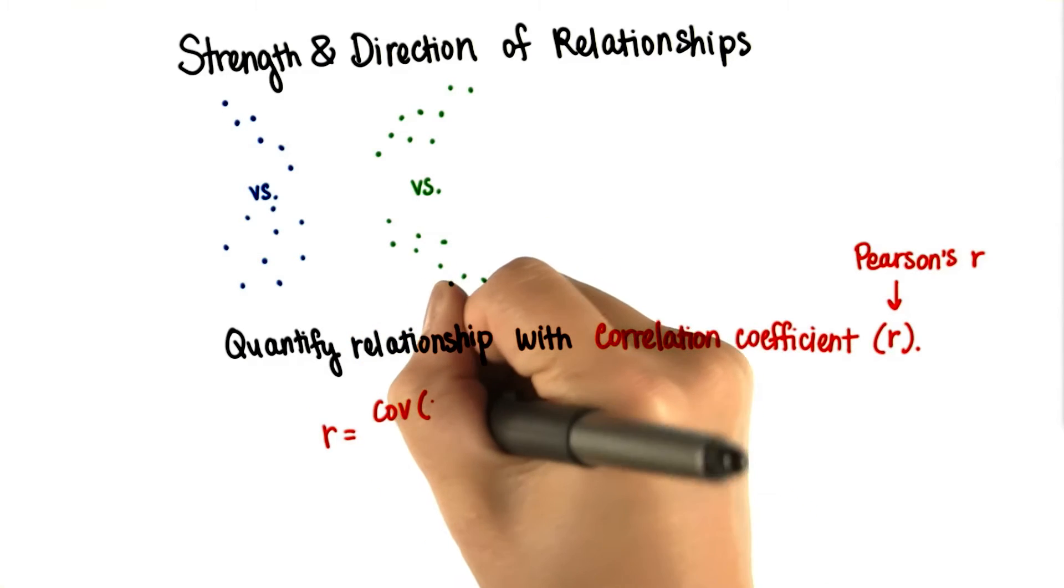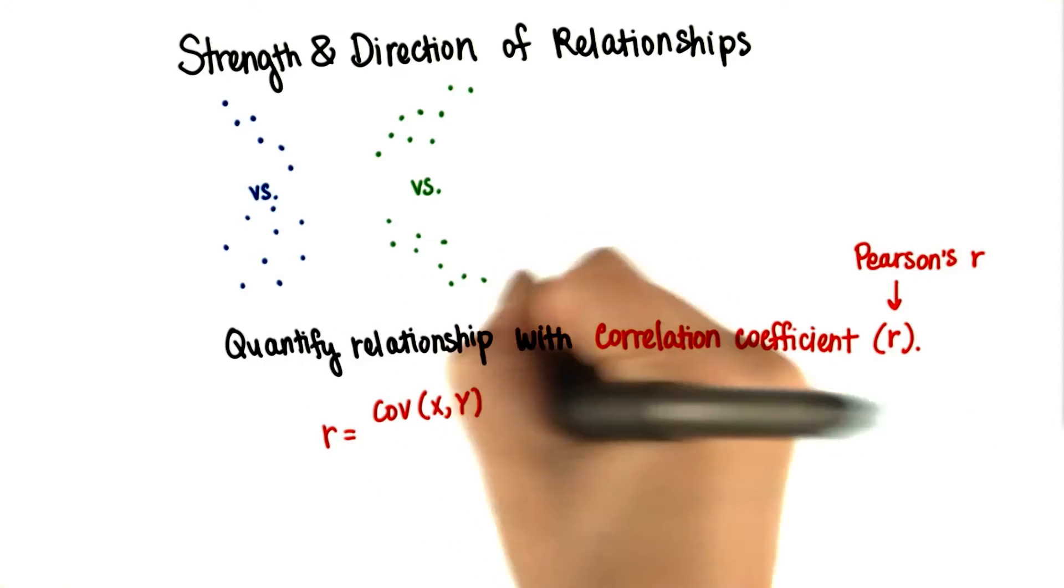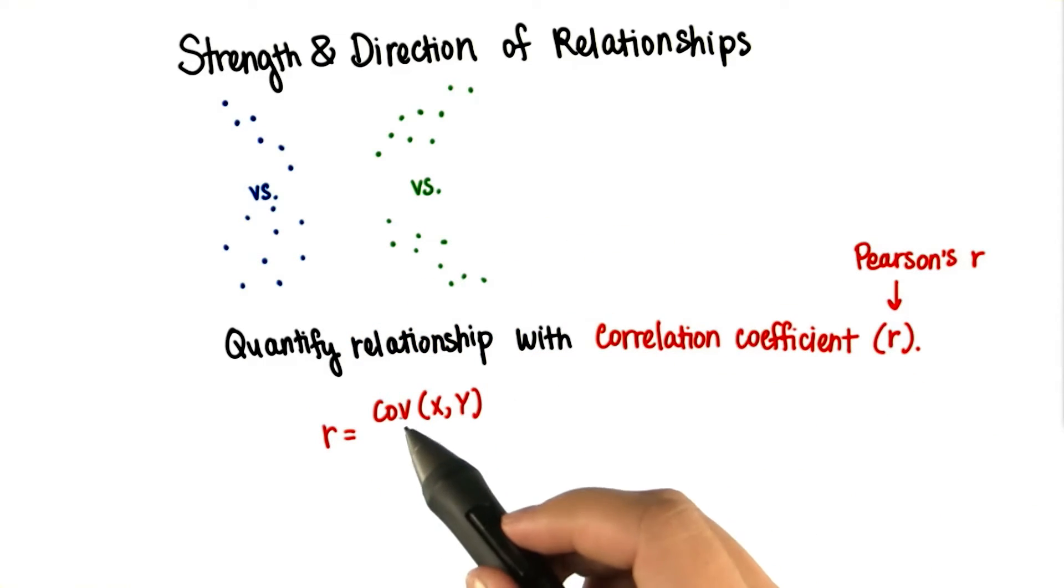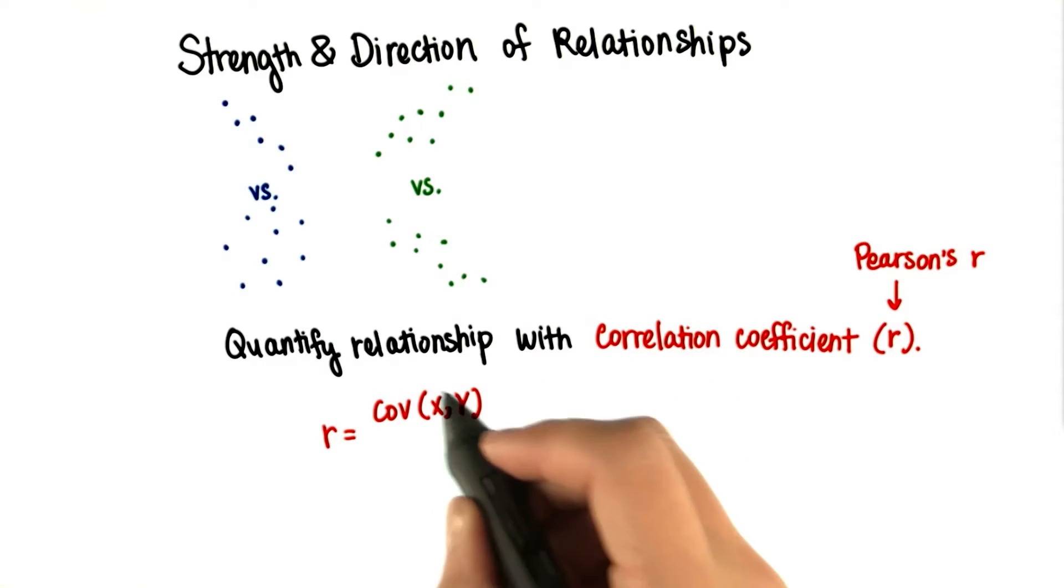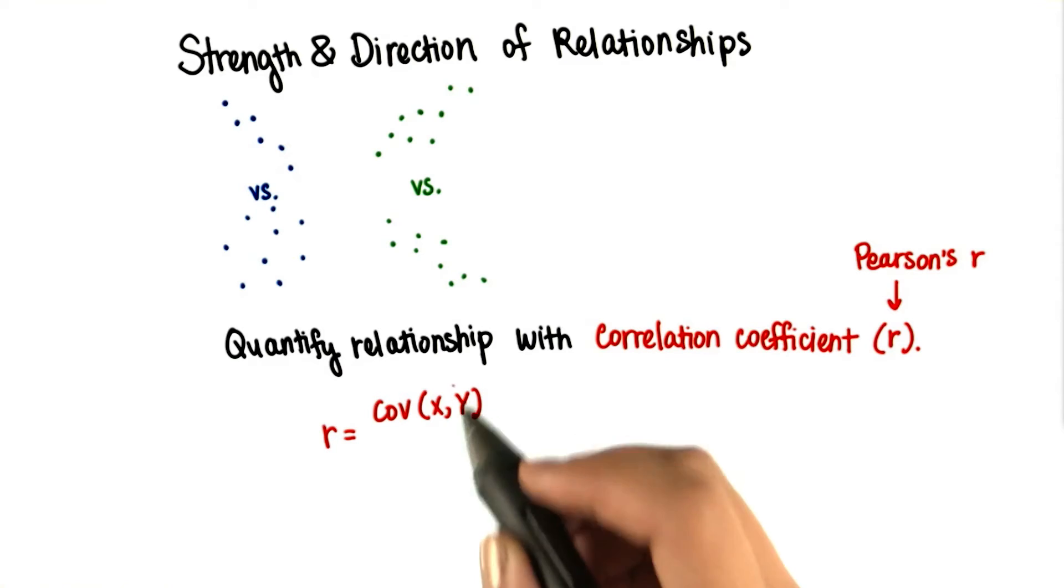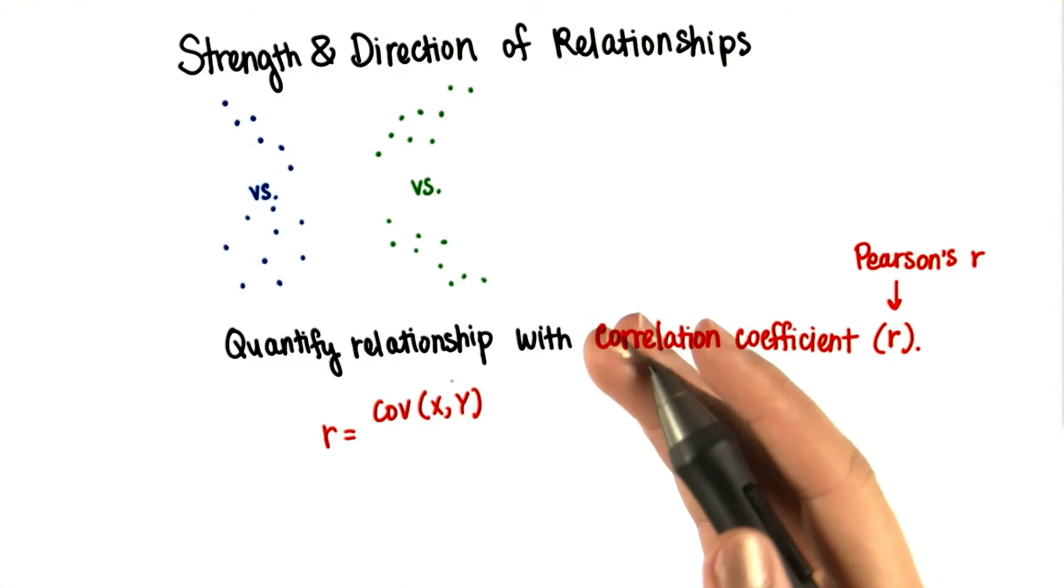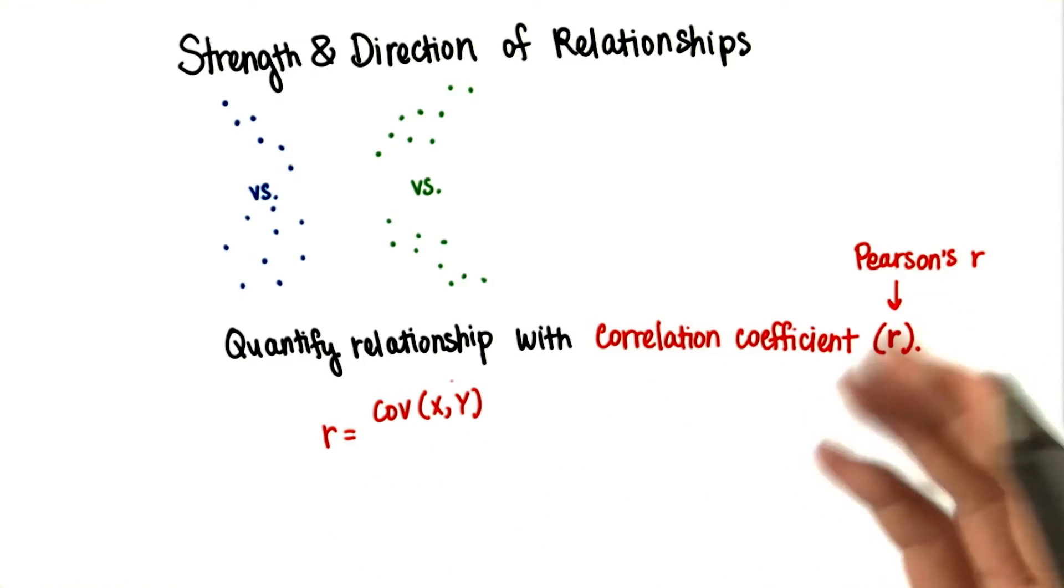The numerator is the covariance of x and y. This is a function notation. This does not mean cove, or some number times x times y. This is the covariance of x and y, which is in itself a statistic for how much x and y co-vary. In other words, how much do they vary together?